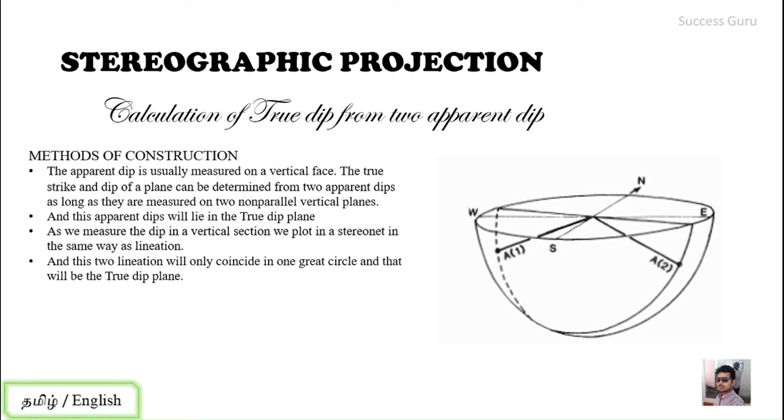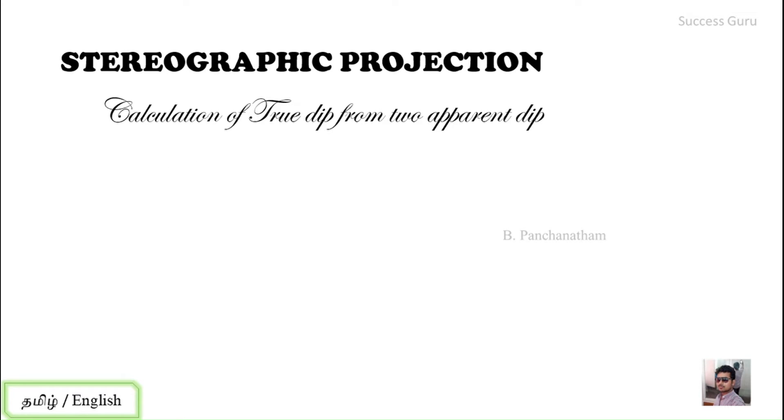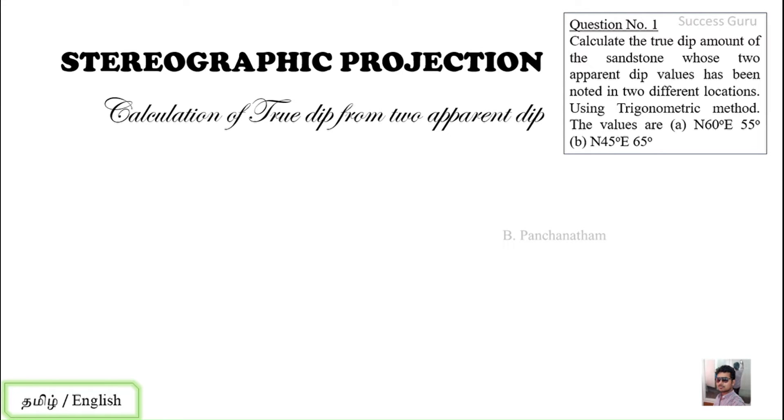So let us try this with one question which we already solved. Let us consider this question: we have to find out the true dip from two apparent dips. One is N60° 55°, another is N45° 65°. So these are the two different apparent dip values which lie in two different planes.